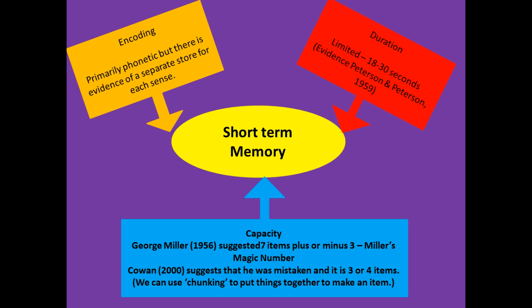If we look at encoding in short-term memory, it seems to be primarily phonetic — that is, how something sounds. But later evidence came for a separate store for vision, and some indication that every sense has its own separate store. This goes against what Atkinson and Shiffrin suggested, because they suggested the stores were unitary. Duration in short-term memory is limited. Peterson and Peterson did an experiment in 1959 to show this — they showed that when you stop people rehearsing things in short-term memory, it stopped information passing on to long-term memory and they were unable to recall it.